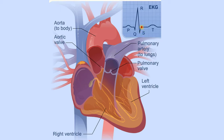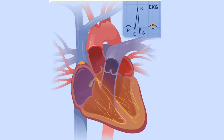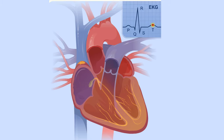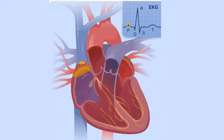As the signal passes, the walls of your heart's ventricles relax and await the next signal. On the EKG, the T wave marks the point at which your heart's ventricles are relaxing. This process continues over and over.